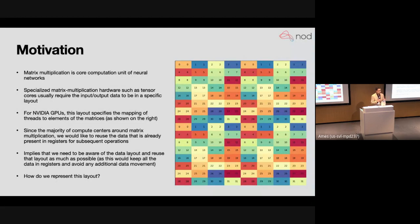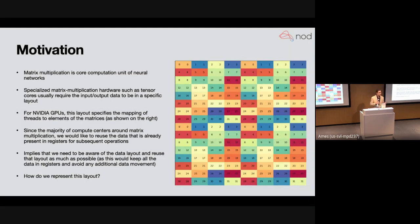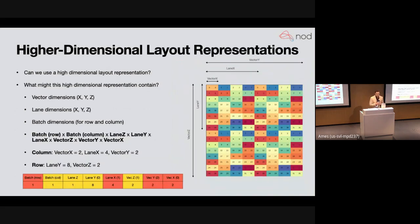Since the majority of compute centers around matrix multiplication, this layout is very important — and it's important because matrix multiplication is surrounded by several other operators. We'd like to reuse this layout for all surrounding operators to avoid the cost of data movement from registers to shared memory and back. So I propose a higher-dimensional representation. Looking at the 16×16 A matrix: the first two elements along a row are owned by thread zero — we annotate this as a vector_x dimension of size two, repeated four times each owned by different threads as lane_x of size four, and then a vector_y of size two.